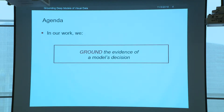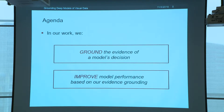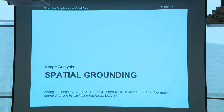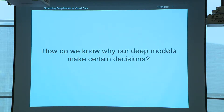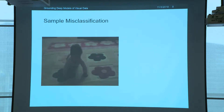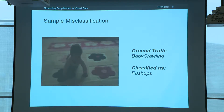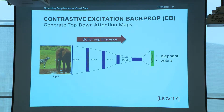In our work, we ground the evidence of a model's decision — we try to see why the model makes a specific prediction and then use this grounding to further improve the models. I'll start by giving some motivations on spatial grounding, which is grounding in the image space. This is an example frame from one of the videos we tested on our models. The ground truth for this frame is baby crawling, however our system decided to classify this frame as push-ups. The pose of the baby is actually very similar to the pose of a person performing push-ups. If we use grounding, we can start explaining the answers to such questions.